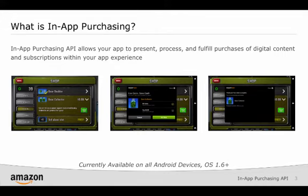The In-App Purchasing API, or IAP, allows your app to present, process, and fulfill purchases of digital content and subscriptions within your app experience. You submit your app and In-App Purchase items to the Amazon Developer Portal, and the API will handle the details about purchase flow, payment processing, providing a receipt to your app, and managing rights to the purchasable content. IAP is currently available on all Android devices version 1.6 and above, when your app has been distributed through the Amazon App Store. This of course includes all Kindle Fire devices.